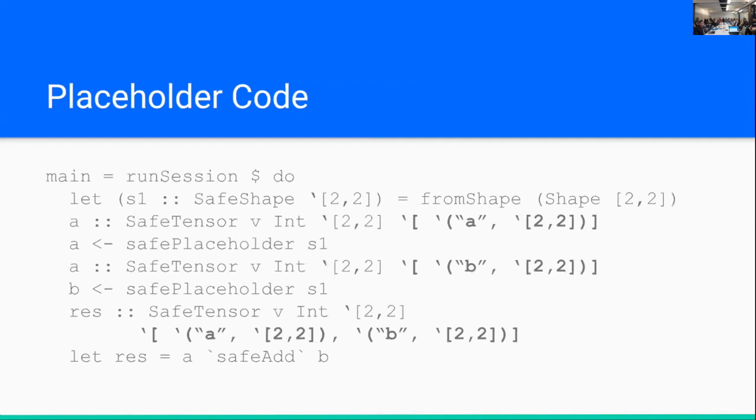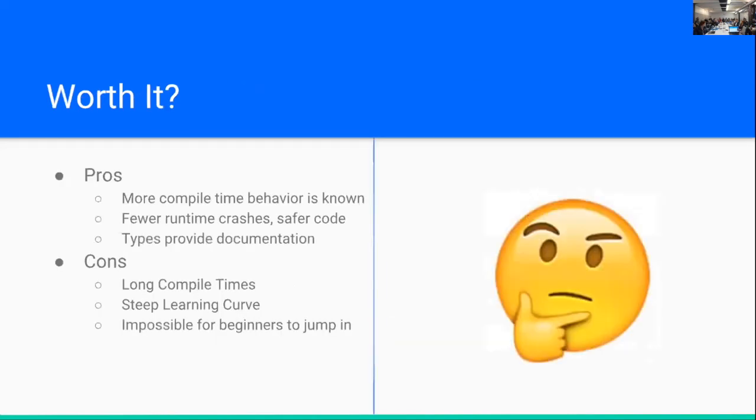And so here's a very quick example. And we can see that the code gets a little complicated, especially when we're trying to write down the type signatures. So we have one placeholder that will say depends on A, which has to be a 2 by 2 matrix, and B. And then when we add them together, we get that depends on both of these.